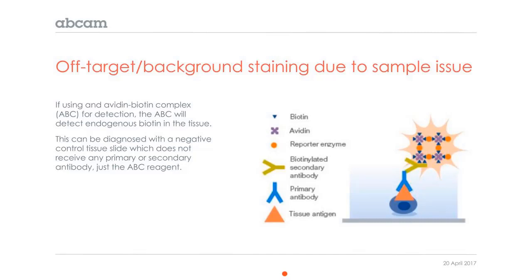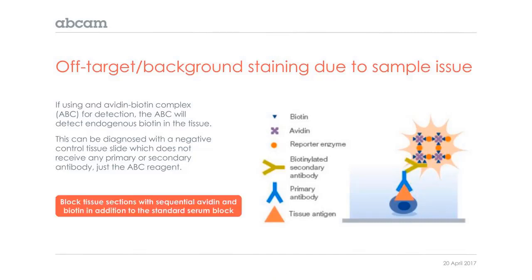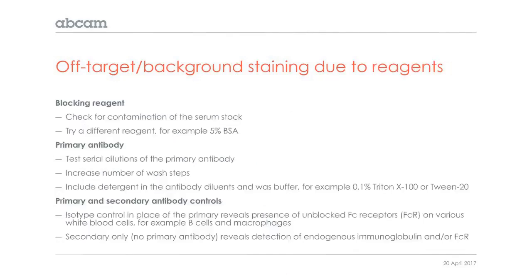You'll see this if you just incubate a section with the ABC complex alone. If you see staining, the way to address it is to incubate with sequential avidin and biotin — there are kits available with solutions of avidin and biotin that will block the endogenous biotin.